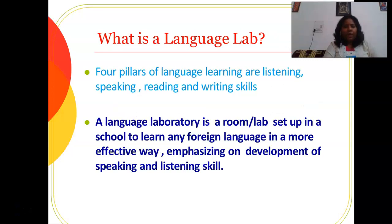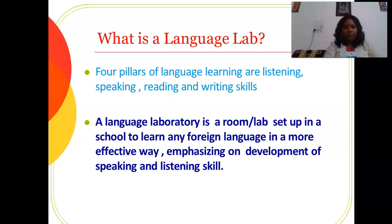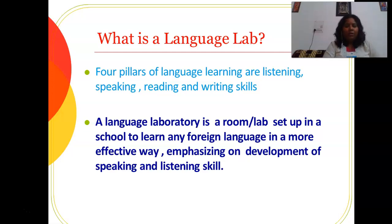First of all, we need to know what is a language lab. As we all know, there are 4 pillars of language learning: speaking, listening, reading, and writing. In the correct order, first we listen to the language, then we start speaking, and then reading and writing. But this order applies only in the case of the native language — the first language. When we talk about learning a second language, this order sometimes changes: first we read and write, and then we focus on listening and speaking skill.